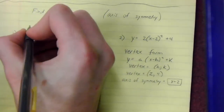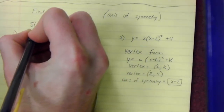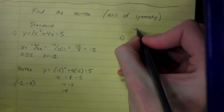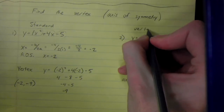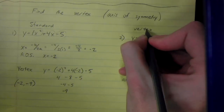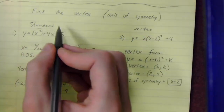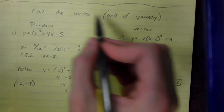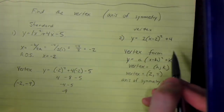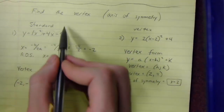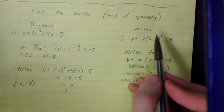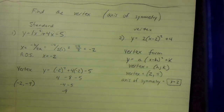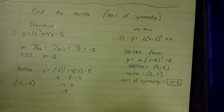So that's standard form versus vertex form. Standard form has its benefits, but for finding the vertex and axis of symmetry, standard form is a lot more work whereas vertex form is super easy for that.